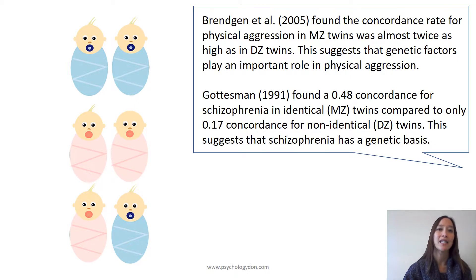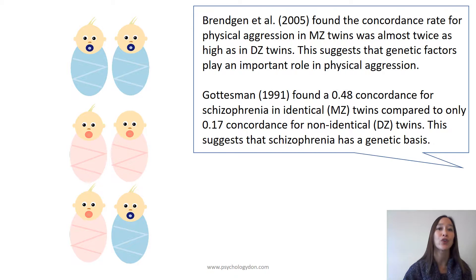Gautisman, 1991, found a 0.48 concordance rate for schizophrenia in identical twins, compared to only a 0.17 concordance rate for non-identical twins. This again suggests that schizophrenia has a genetic basis, because the concordance rate for MZ twins was higher.